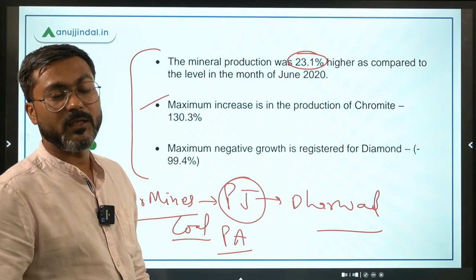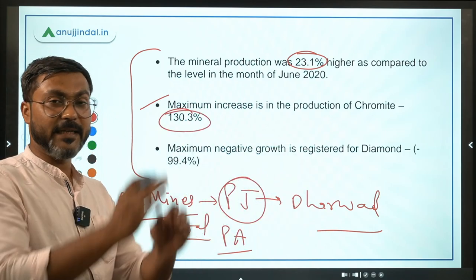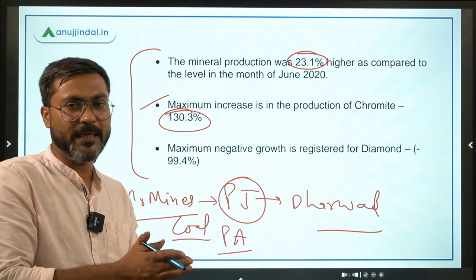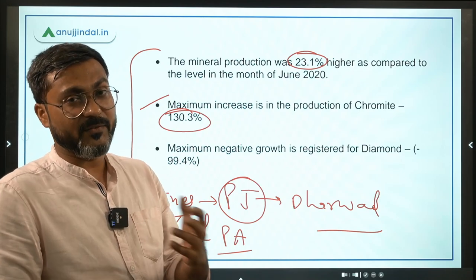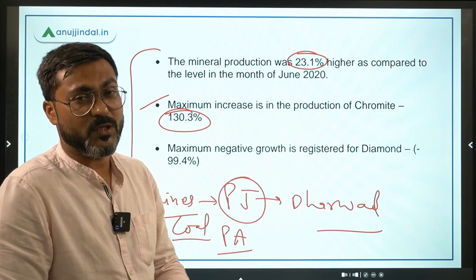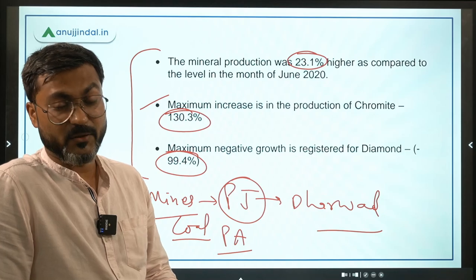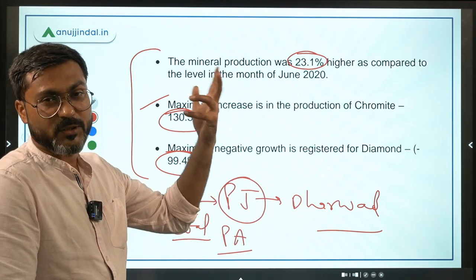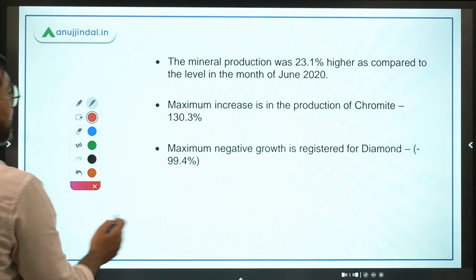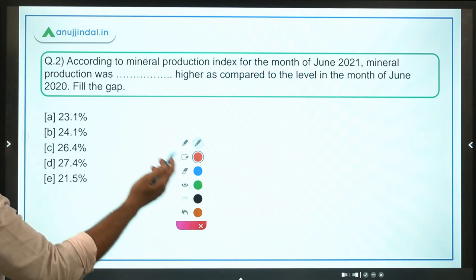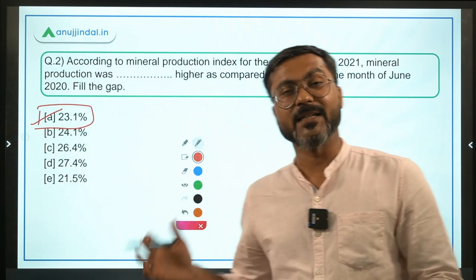The maximum increase in production was in chromite, at 130.3%. There were also certain minerals with a negative growth rate, and among them, the highest negative growth was in diamond production at minus 99.4%. That means diamond production fell by almost more than half. The answer to Question 2 is 23.1% higher compared to the corresponding period of the previous financial year.